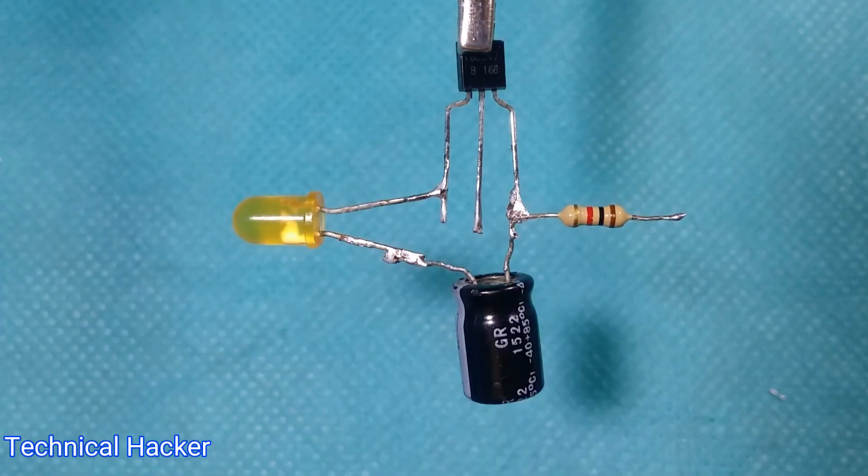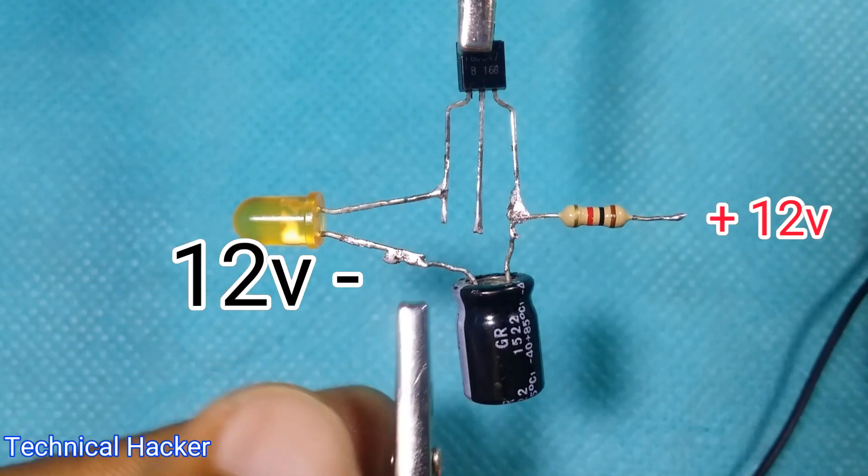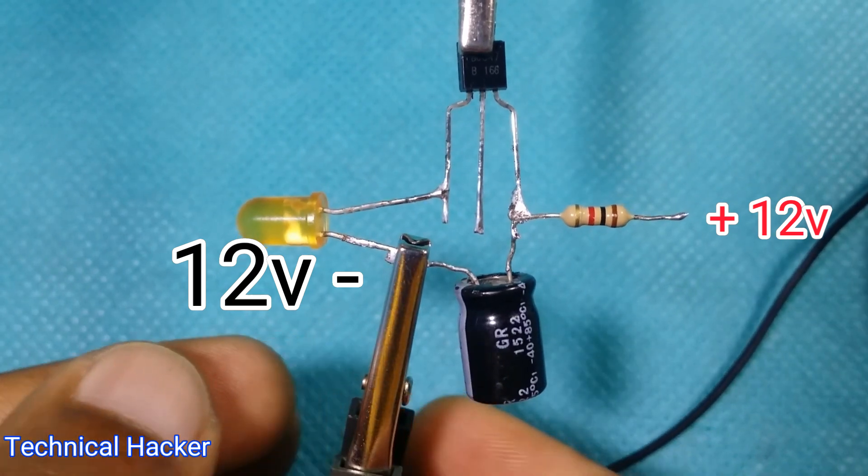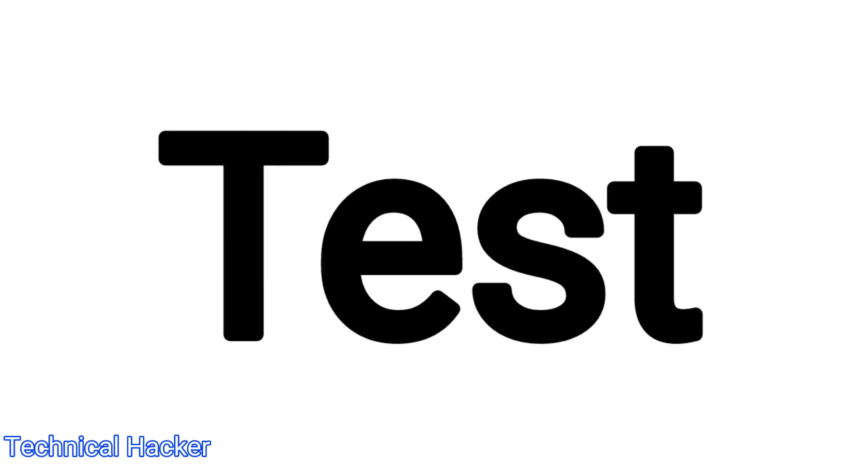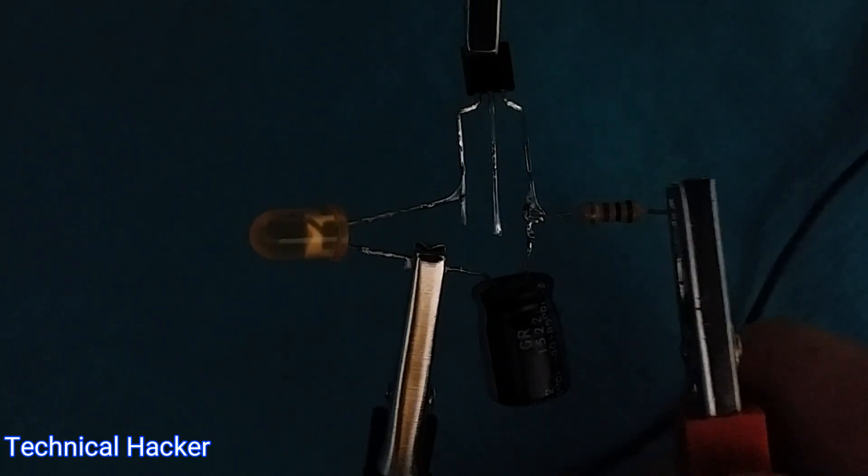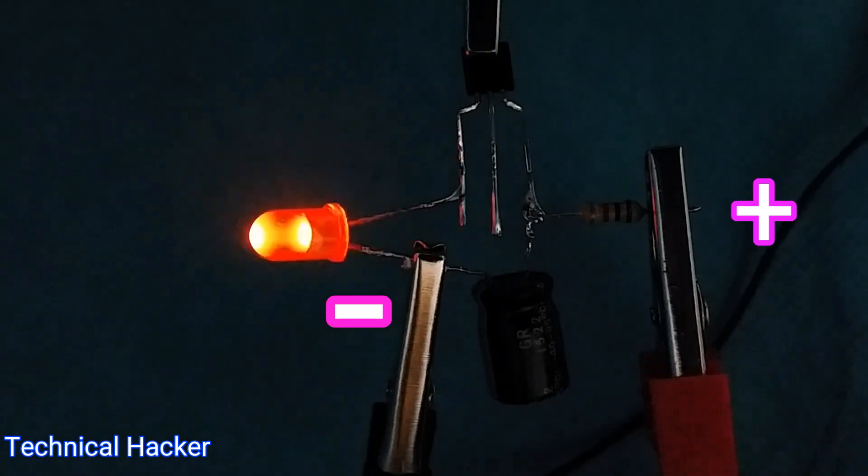LED negative side and capacitor negative side connect 12 volt power supply negative side, and connect 12 volt power supply positive side with resistor.